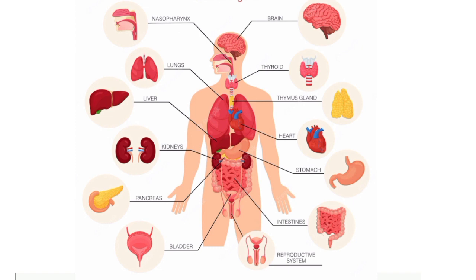The heart performs a single primary function while the kidney performs many complex functions. Other organs in the human body include the liver, pancreas, intestines, reproductive organs, brain, thyroid gland, stomach, bladder, and lungs, among many others.